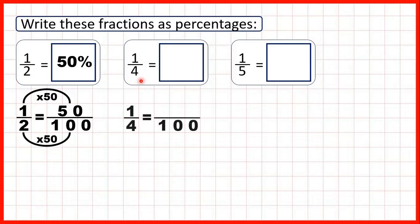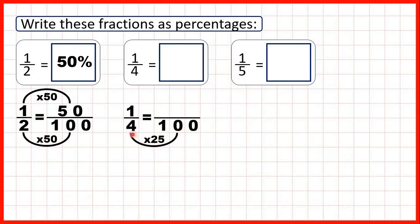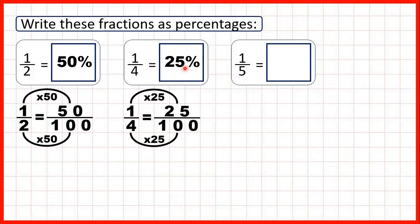Now we have one quarter. We need to find an equivalent fraction which has a denominator of 100. Four times 25 is 100, because if you count up in 25s four times you get 25, 50, 75, 100. What we do to the denominator we need to do to the numerator as well, and one times 25 is 25. So that's 25 percent. It's really important that we don't write 25 over 100 percent because the percentage sign already tells us out of 100.